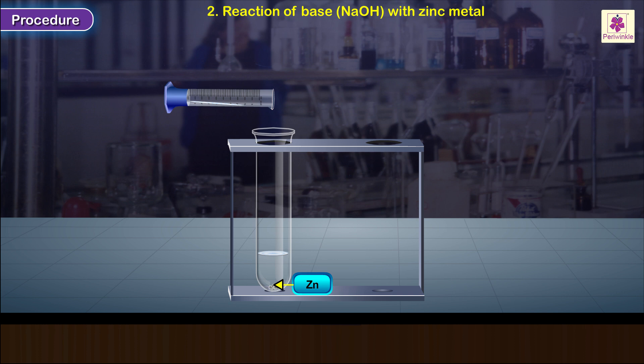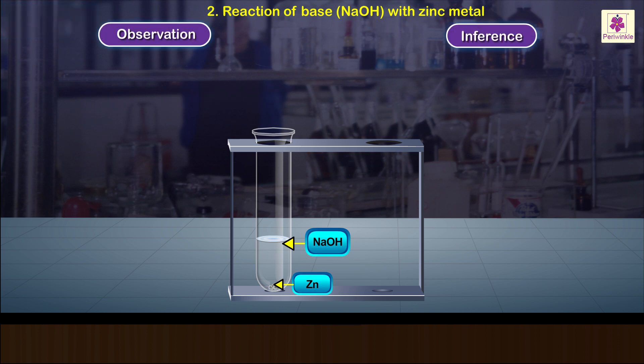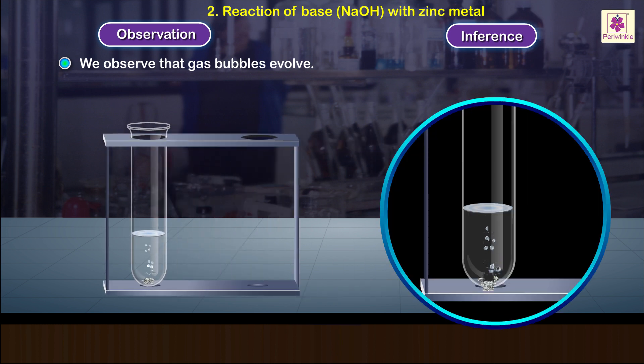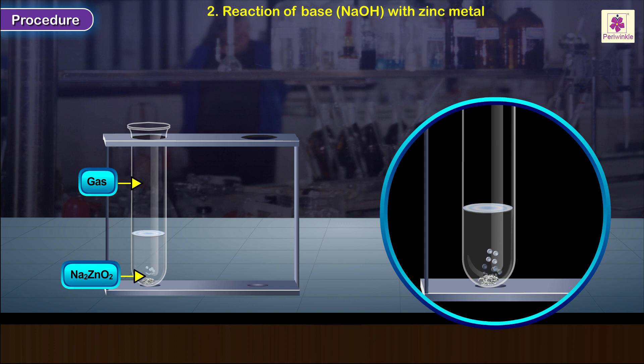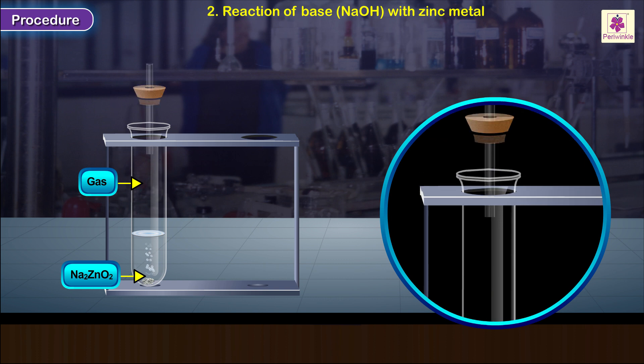Observation and inference: We observe that gas bubbles evolve. This shows that at least one of the products is gaseous. When some bubbles evolved in the solution, close the mouth of the test tube with a rubber stopper inserted with a glass tube having a jet end.